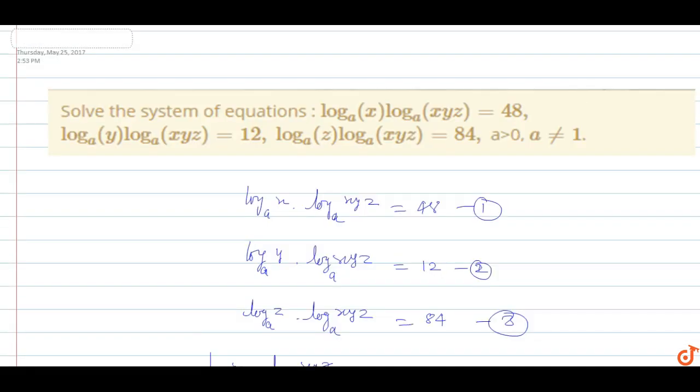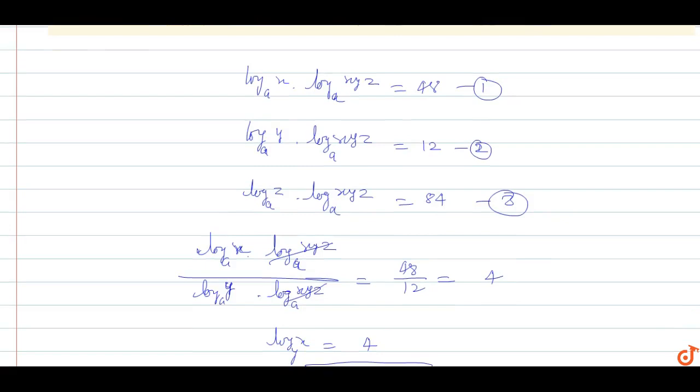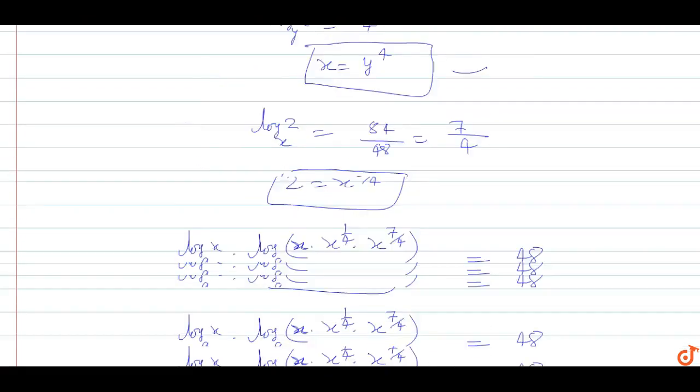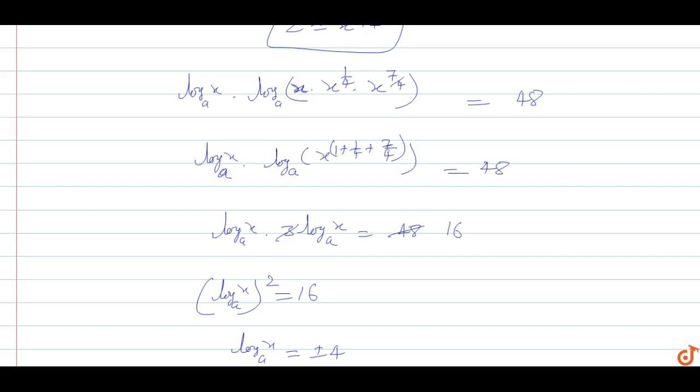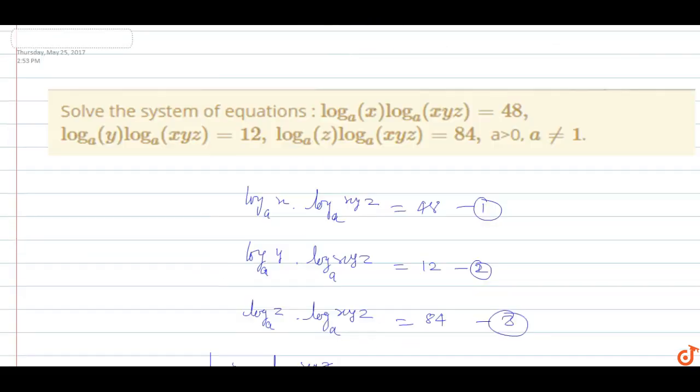So from the system of equations, the values of x, y, z are: x equals a to the power 4, y equals a, and z equals a to the power 7. This is the answer for this question.